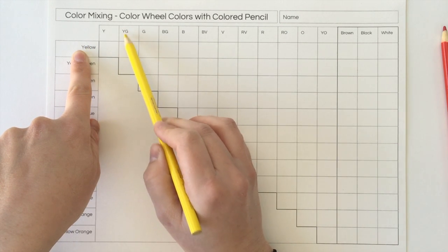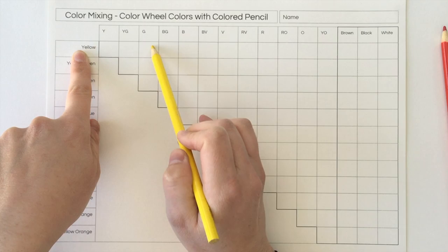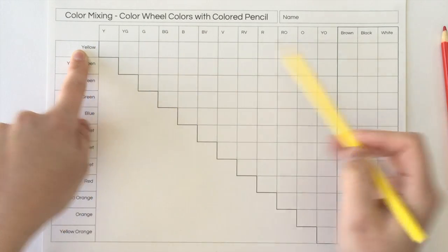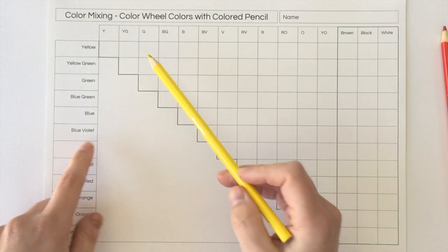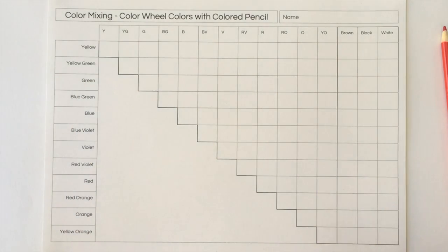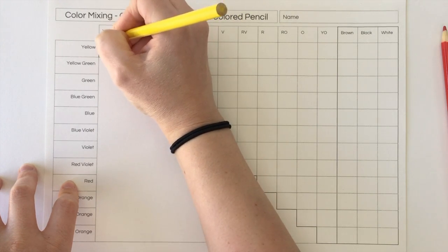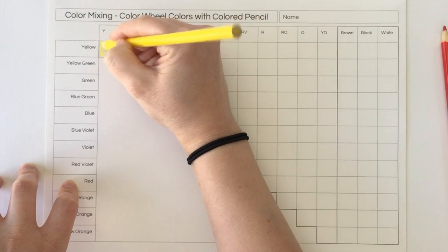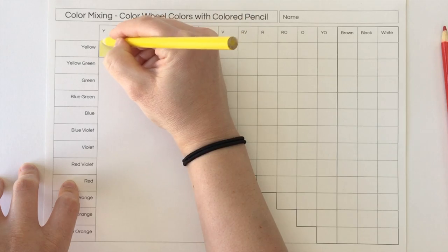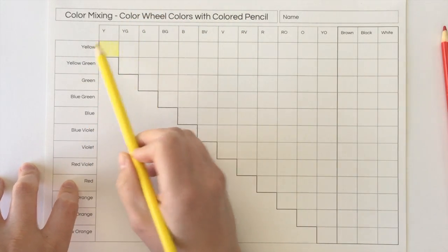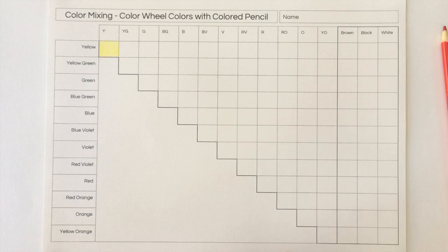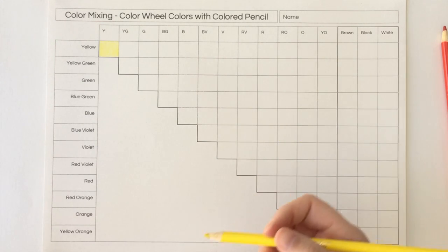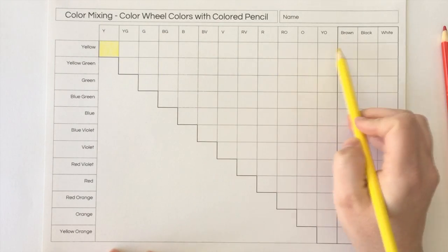This box has yellow and yellow-green together. Yellow and green. Yellow and blue-green and so on. So all of the colors you will mix together and that will show you what each color will look like mixed with another color. And you're trying to mix them evenly. So I'm going to go box by box because depending on the two colors you're mixing, you may need more yellow for it to show up.